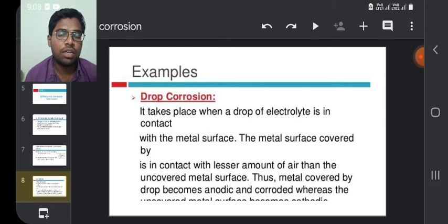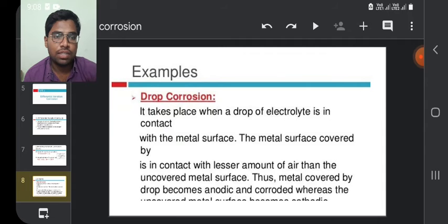Examples are drop corrosion. It takes place when a drop of electrolyte is in contact with the metal surface. The metal surface covered by the drop is in contact with lesser amount of air than the uncovered metal surface. Thus, metal covered by the drop becomes anodic and corrodes, whereas the uncovered metal surface becomes cathodic.